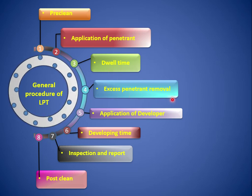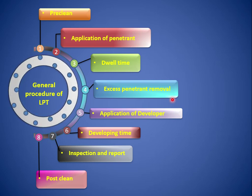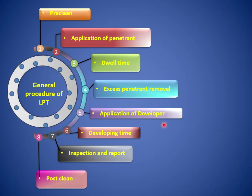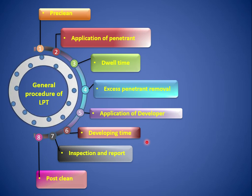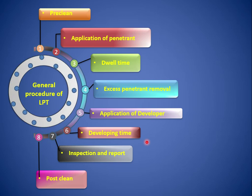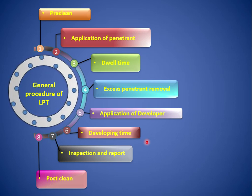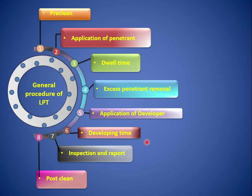Next is excess penetrant removal. Everything on the surface other than the penetrant inside the discontinuity is considered excess penetrant. Next is application of developer. Developer action is similar to the penetrant. After developer, there is developing time. Next is inspection and report, and finally post clean. So the general procedure steps are: pre-clean, application of penetrant, dwell time, excess penetrant removal, application of developer, developing time, inspection and report, and post clean.